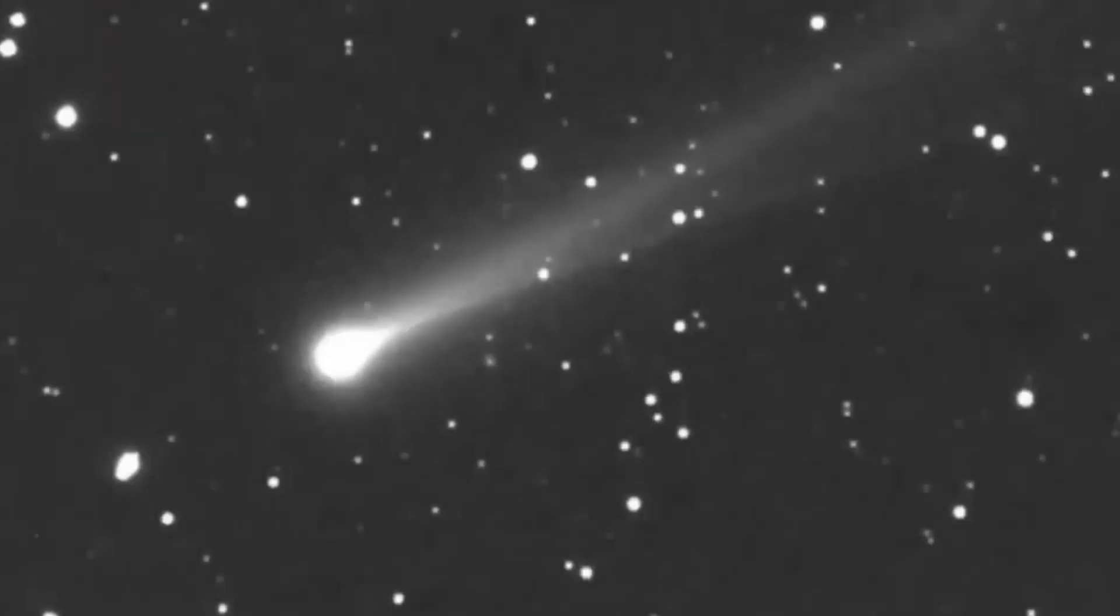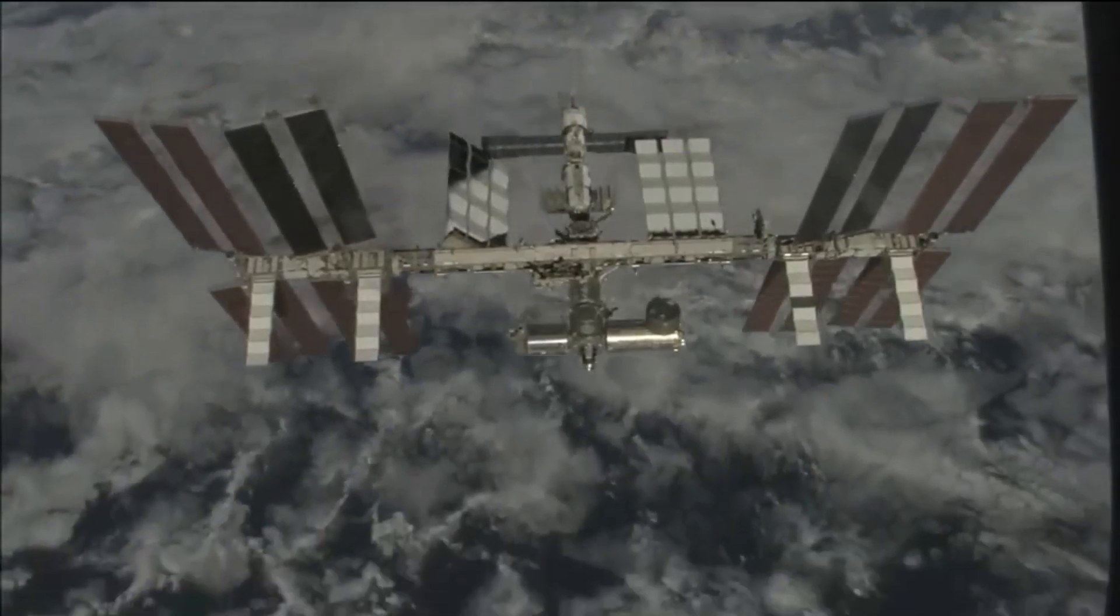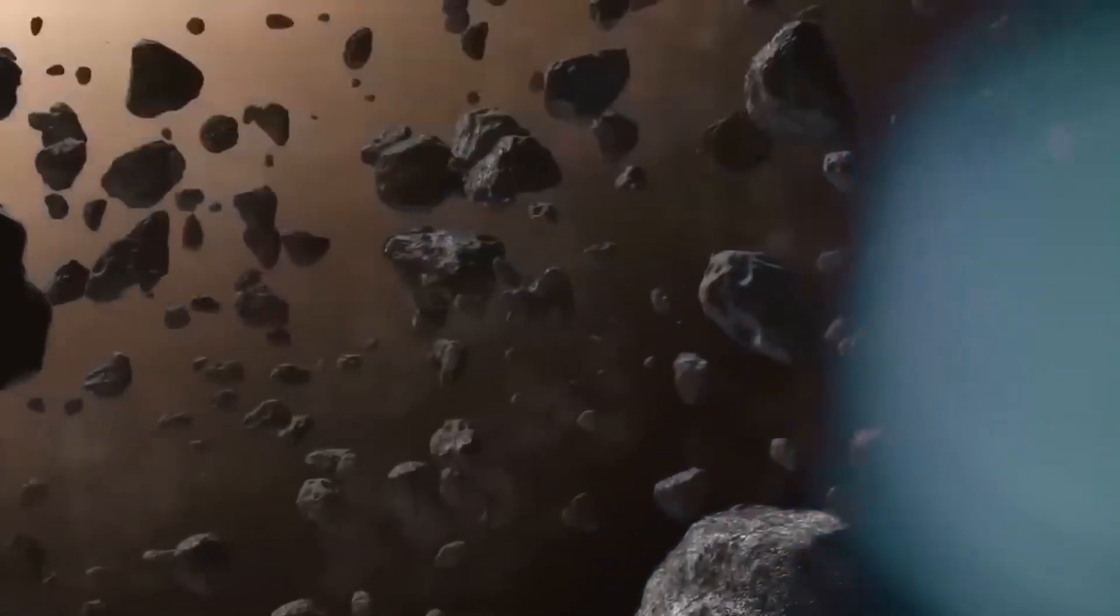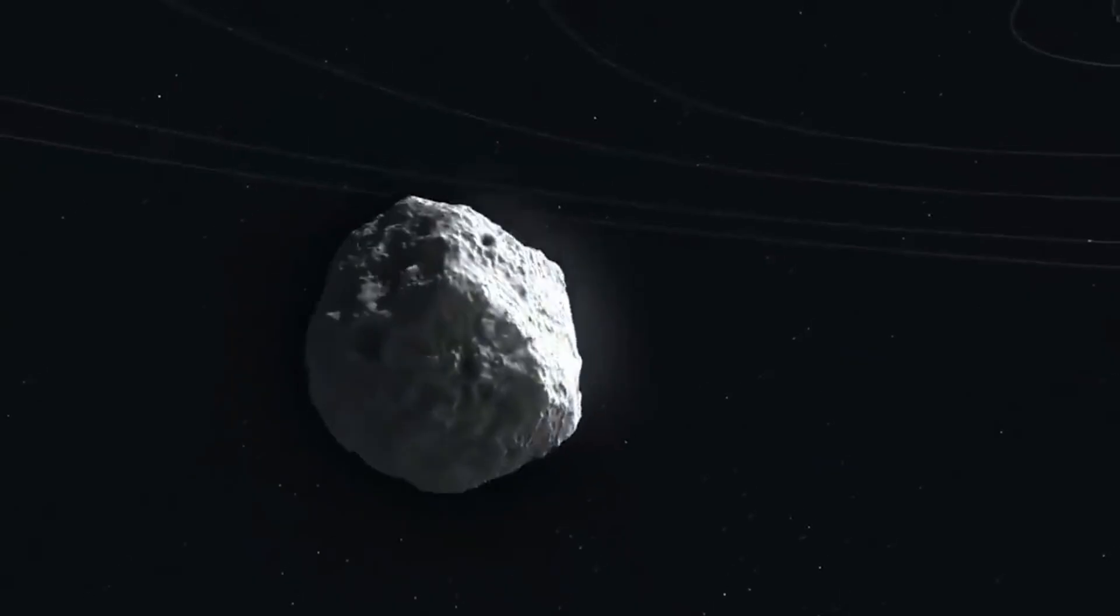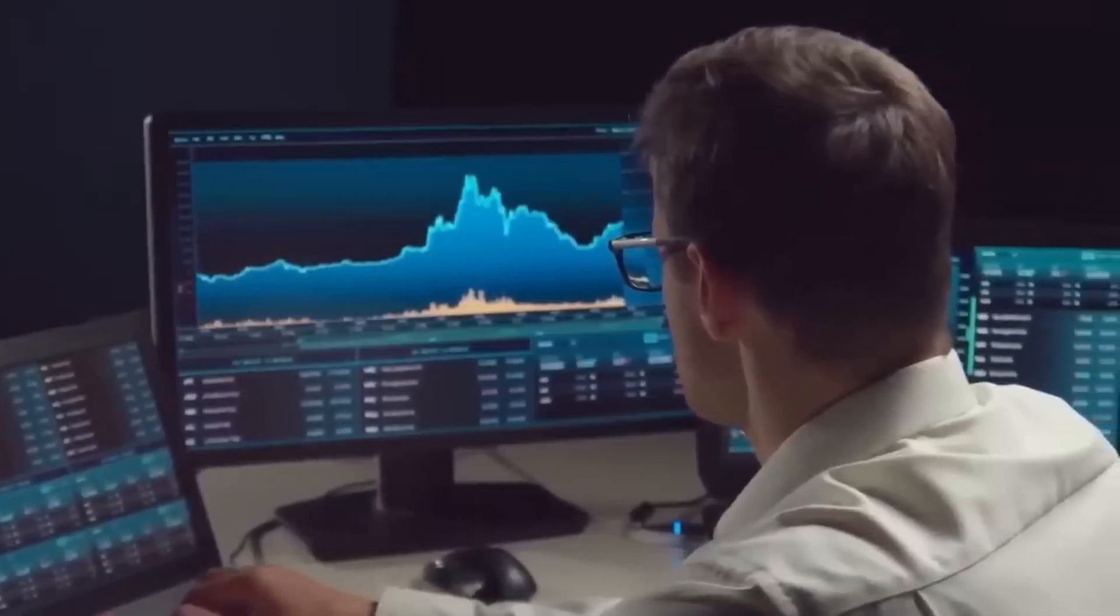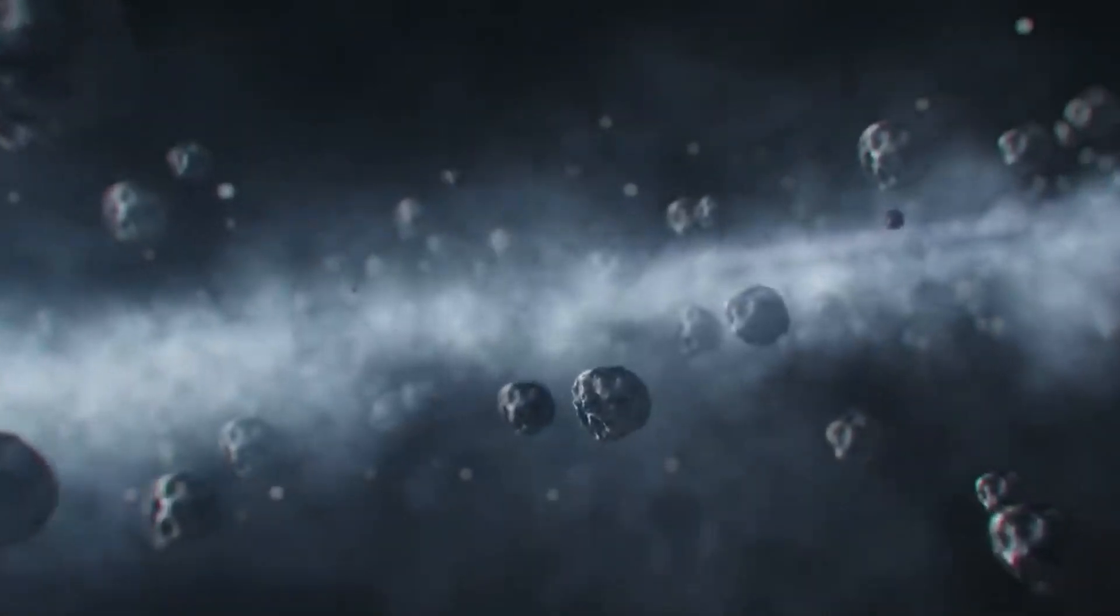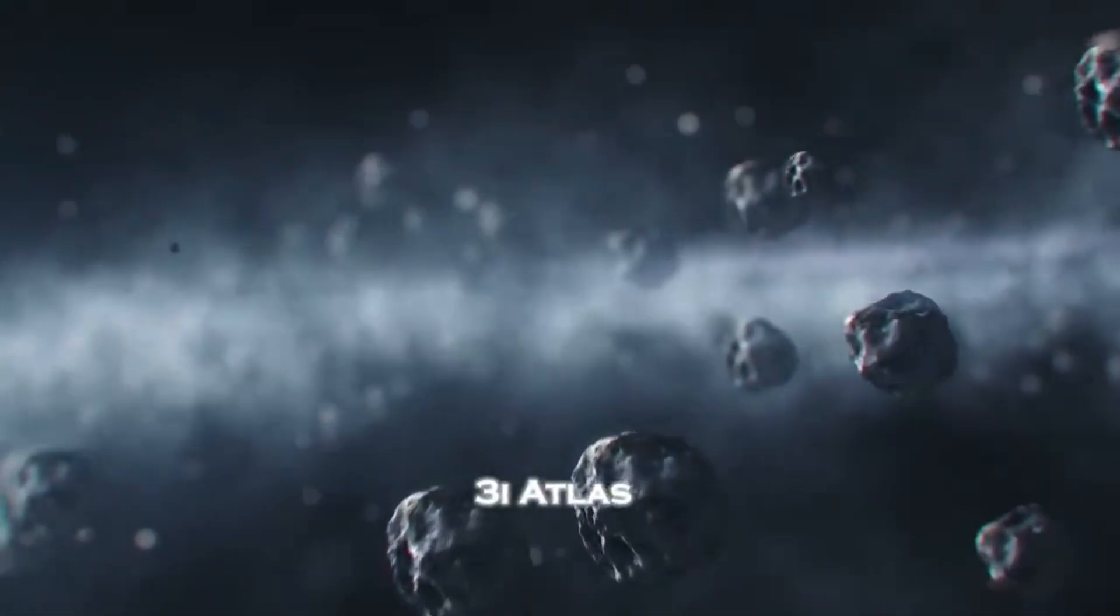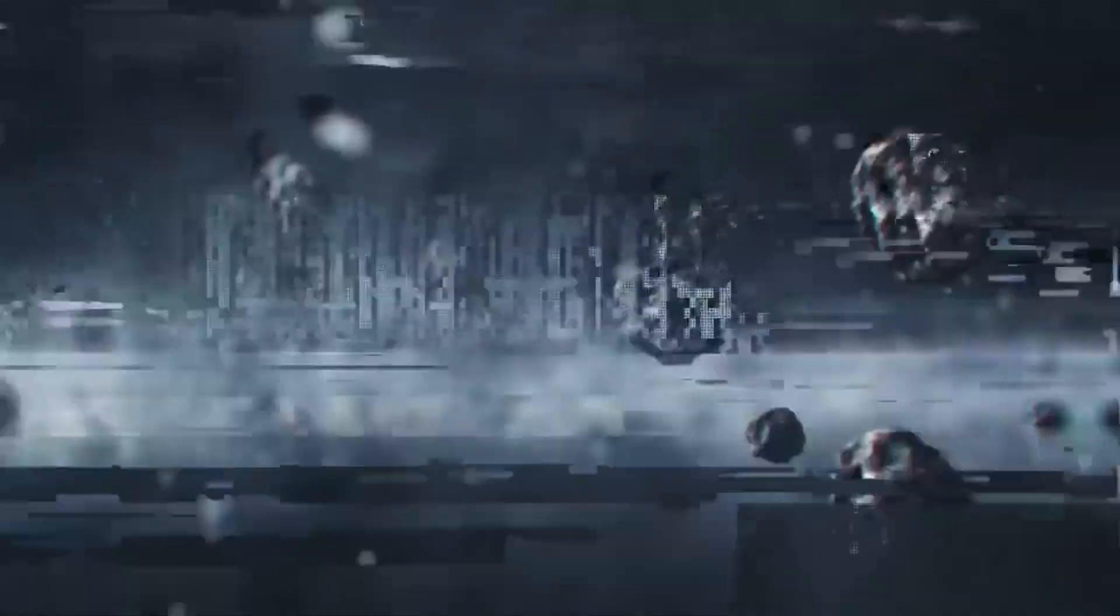Imagine this: a chunk of ancient ice and rock that formed around a completely different star billions of miles away has somehow found its way to our cosmic neighborhood. This isn't just any ordinary comet from our solar system. This is literally a piece of another world, carrying secrets from the depths of interstellar space that could change everything we think we know about how planets and life itself might form across the universe.